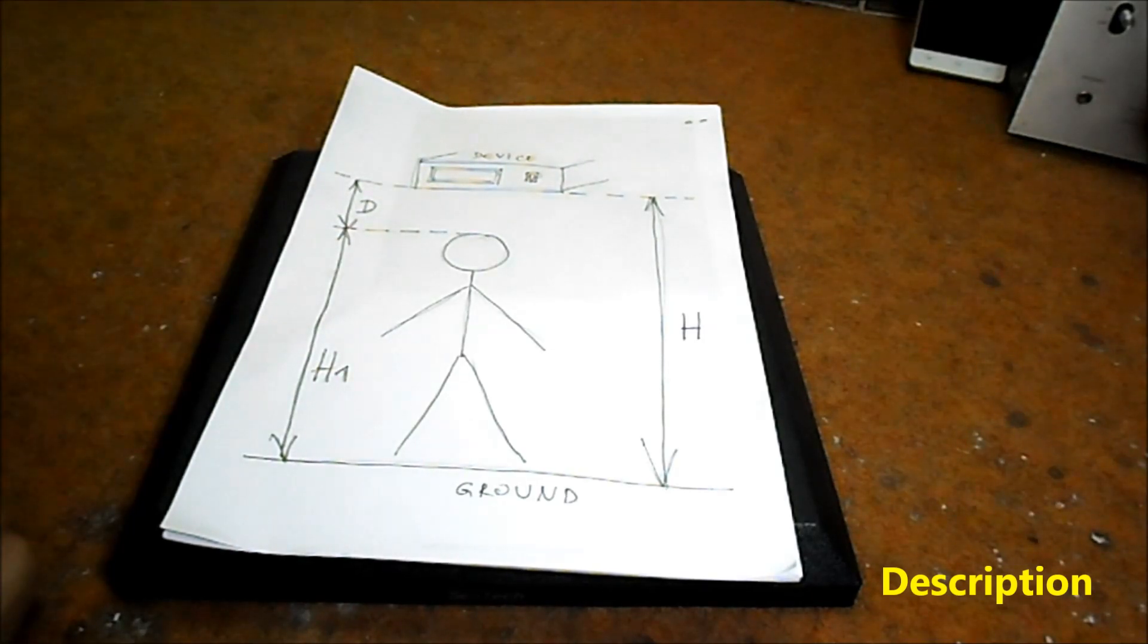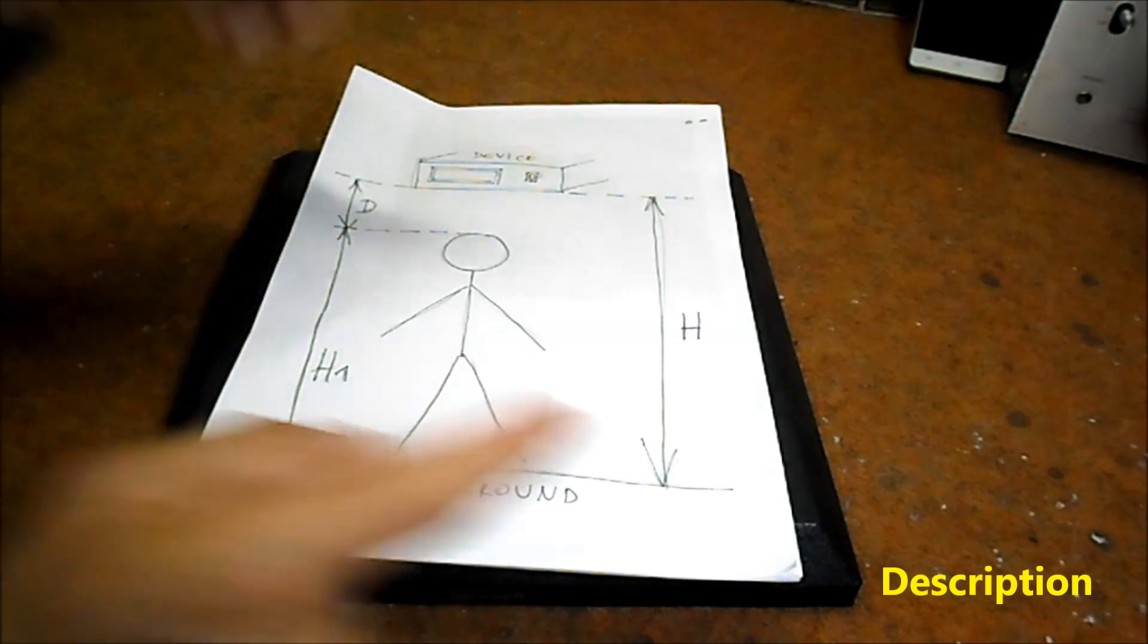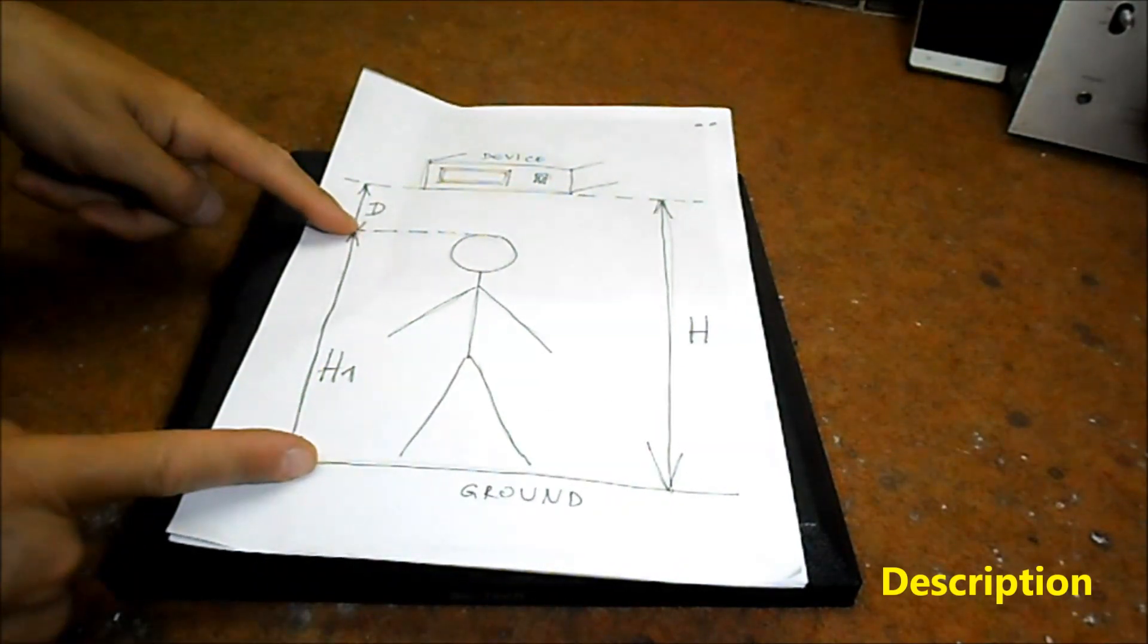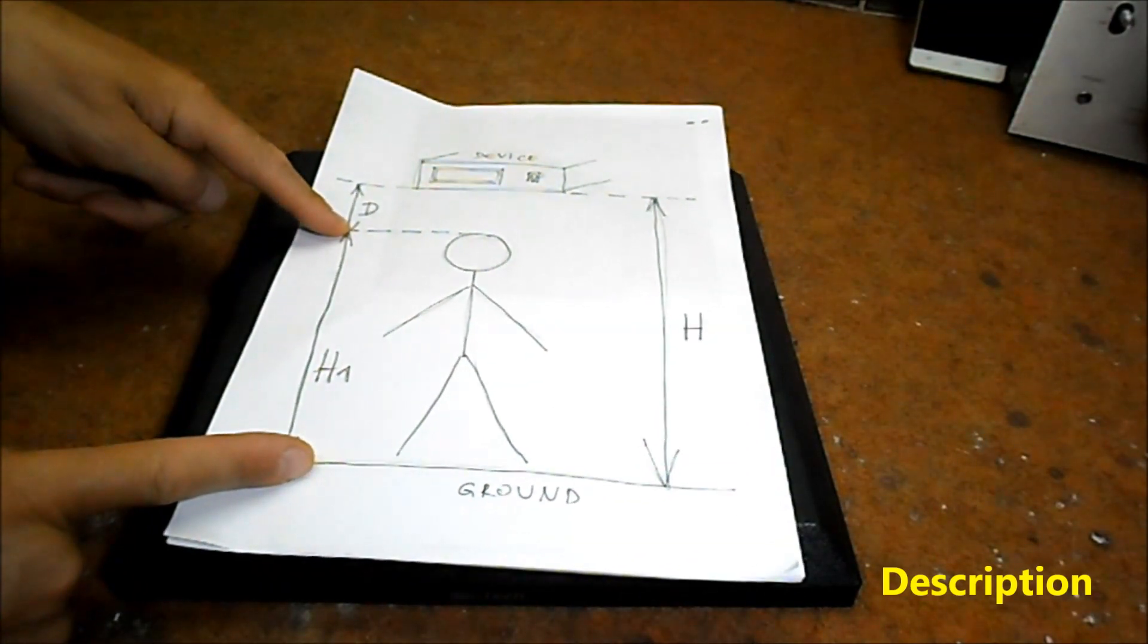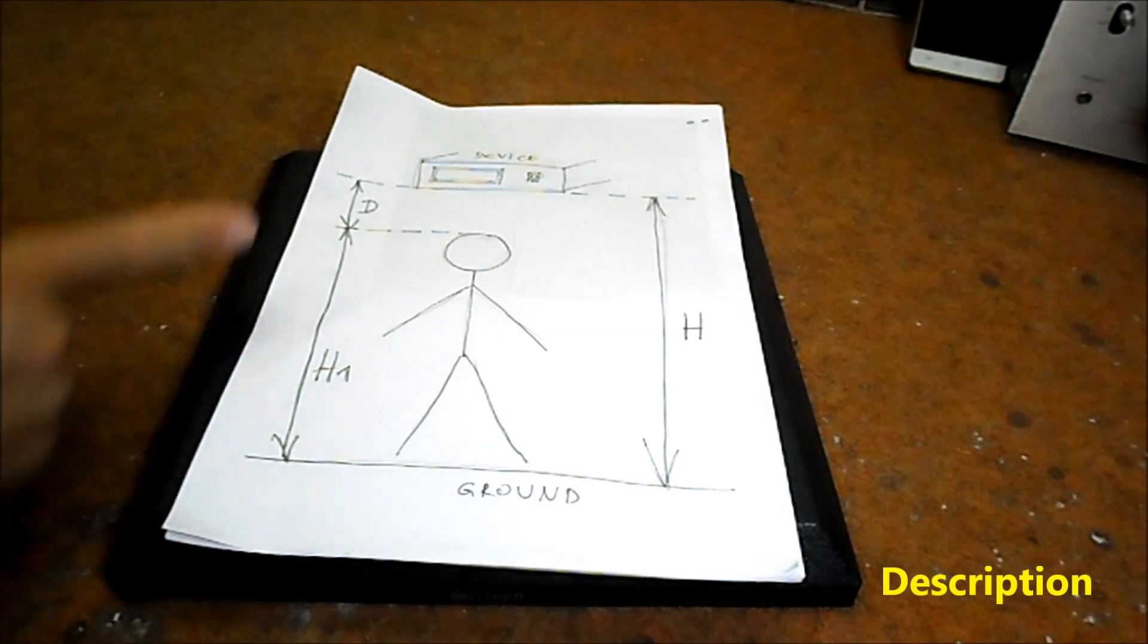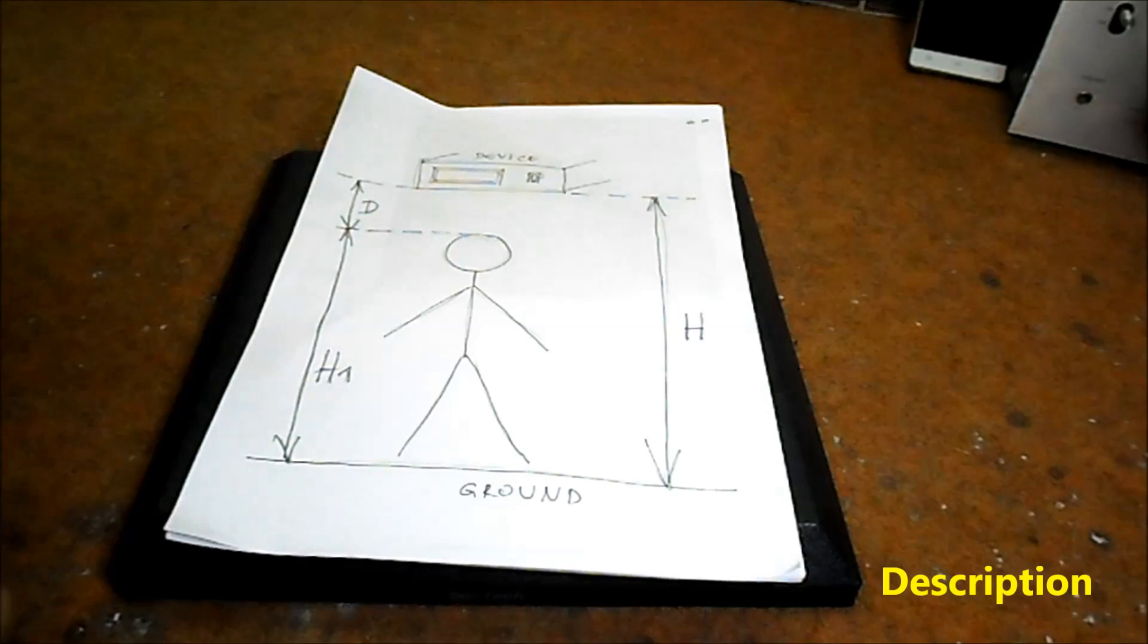Next, the code calculates the distance H minus D, which is actually the height of the person under the device, H1, and displays this value on the LCD.